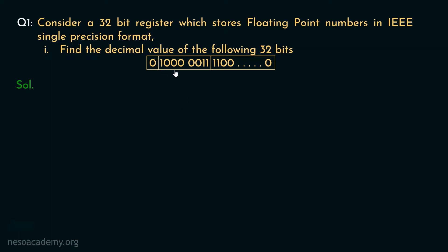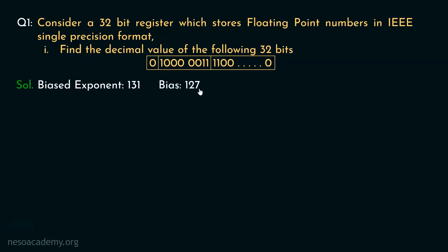Coming to the exponent field, there are 8 bits. Determining the place values: the LSB has the place value 1 (2 raised to power 0), then 2, 4, 8, 16, 32, 64, and the MSB has place value 128. We have 1s placed under the place values 128, 2, and 1, so the biased exponent is 131. In IEEE single precision, the bias is 127, so the true exponent is 131 minus 127 equals 4.